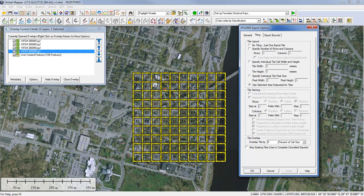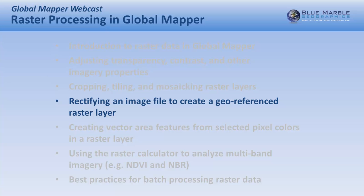Up to this point we've been working with pre-existing raster data layers — files we imported or data streamed from web map services. Now we're going to address one of the challenges when working with raster data: getting data into the application that's non-geographically intelligent. This may be aerial photographs that were not geo-referenced, or scanned maps — perhaps old maps sitting in a back room that somebody finally scanned. They're now in digital form but you'll want to integrate them into your spatial databases. The process for doing that is essentially rectification: applying geographic intelligence to an image file.